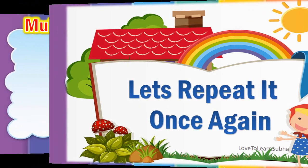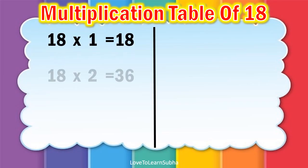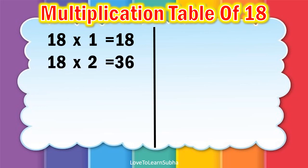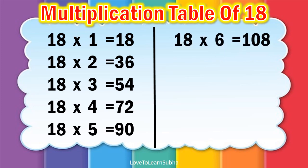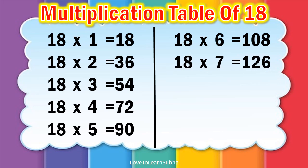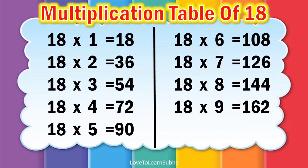18 ones are 18, 18 twos are 36, 18 threes are 54, 18 fours are 72, 18 fives are 90, 18 sixes are 108, 18 sevens are 126, 18 eights are 144, 18 nines are 162, 18 tens are 180.